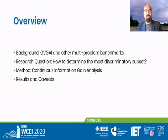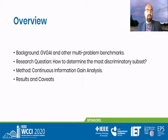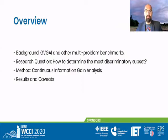First I would like to talk a little bit about GVGAI specifically, but also other multi-game or multi-problem benchmarks, and how we got interested in the overall space of those. Then looking at them in more detail, we'll get towards our central research question: how do we determine the most discriminatory subset of such a benchmark? I will then introduce the general idea and basic concept of the continuous information gain analysis, and then we'll talk about some results and also some caveats of the method.